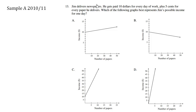Jim delivers newspapers. He gets paid $10 for every day of work plus five cents for every paper he delivers. Which of the following graphs best represents Jim's possible income for one day?